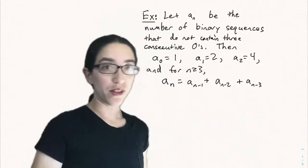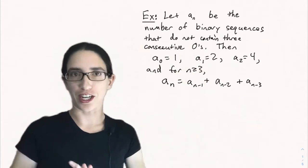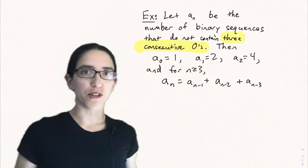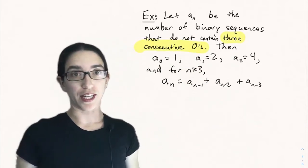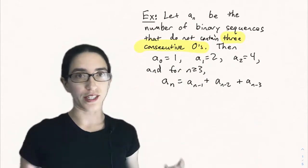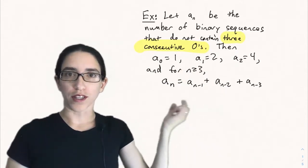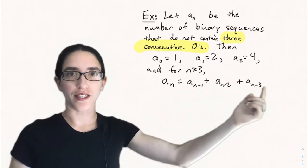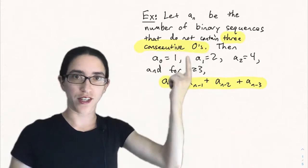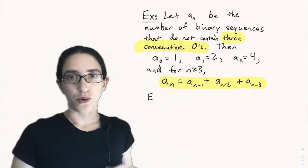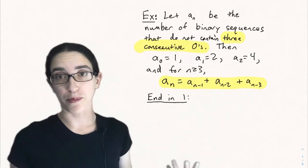Let's look at another example of a linear recurrence that comes up in combinatorics — a generalization of the Fibonacci numbers. Suppose a_n is the number of binary sequences that do not contain three consecutive zeros. We claim that a_n equals a_{n-1} plus a_{n-2} plus a_{n-3}, which is a linear recurrence of depth 3. We can analyze this by counting a_n using casework.